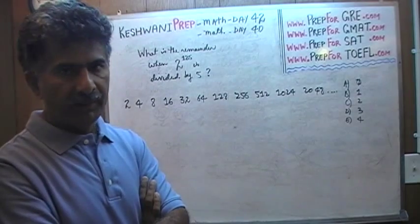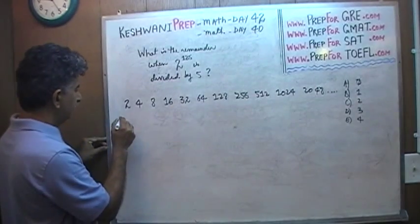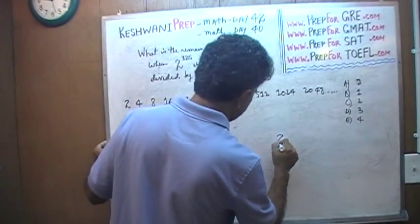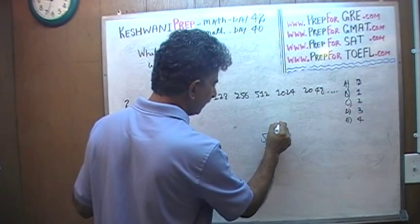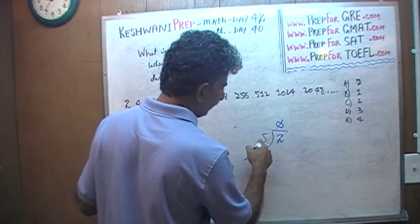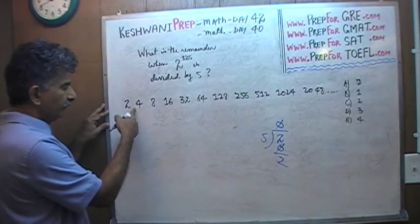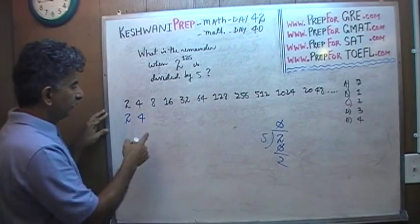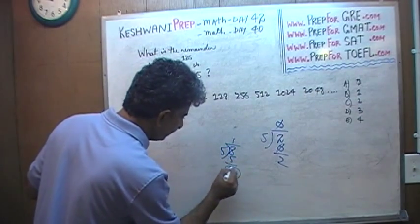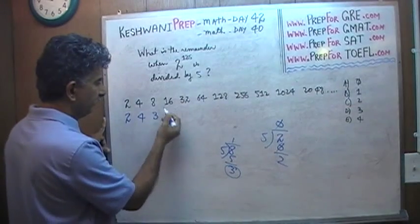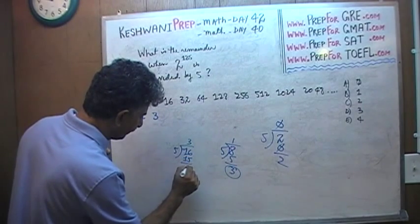If I divide 2 by 5, how many 5s go into 2? Zero, because 2 is too small. So the remainder is 2. If I divide 4 by 5, the remainder is 4. If I divide 8 by 5, the remainder is 3. If I divide 16 by 5, the remainder is 1.